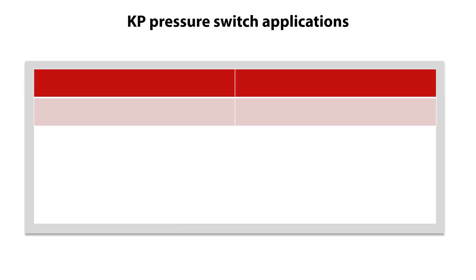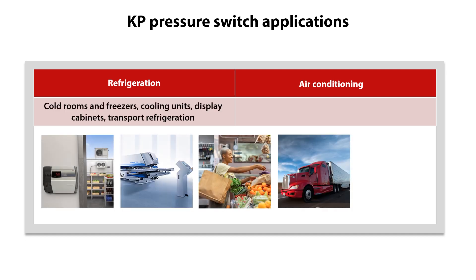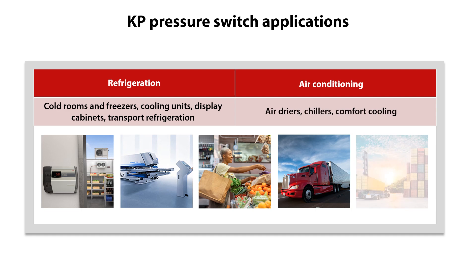The KP Pressure Switches are used in a wide range of applications within refrigeration and air conditioning. Such application examples are cold rooms and freezers, cooling units, display cabinets, transport refrigeration, air dryers, chillers, and comfort cooling.